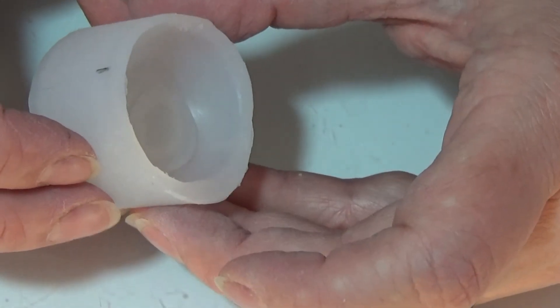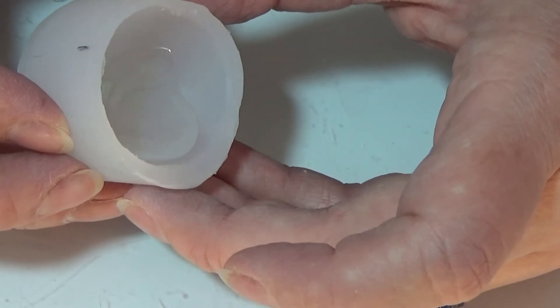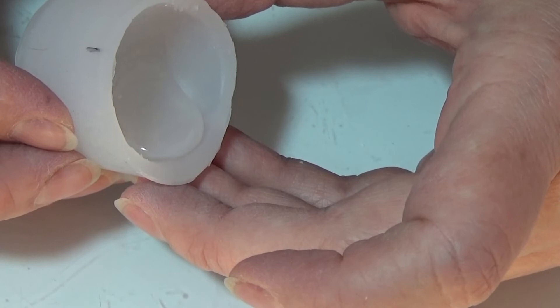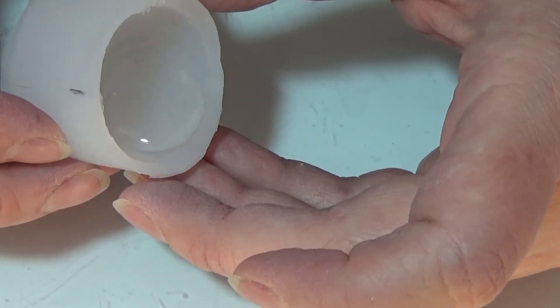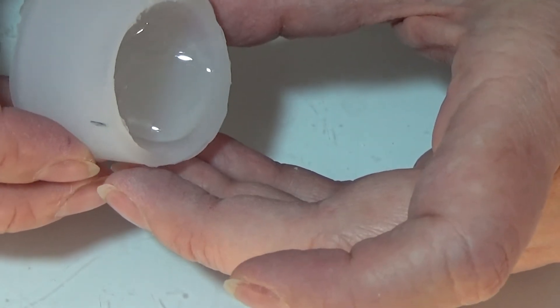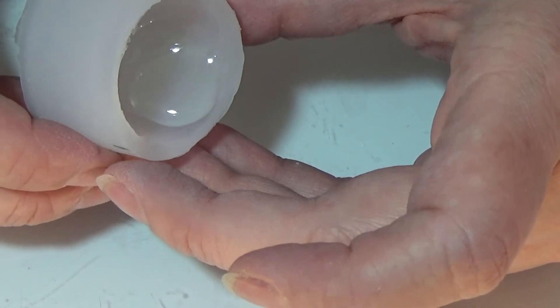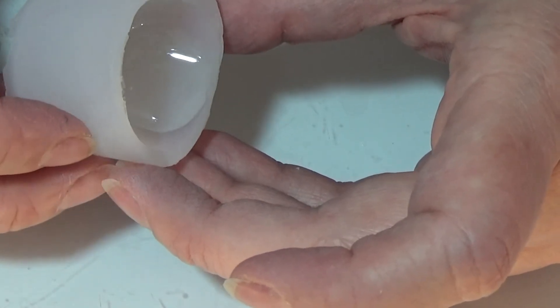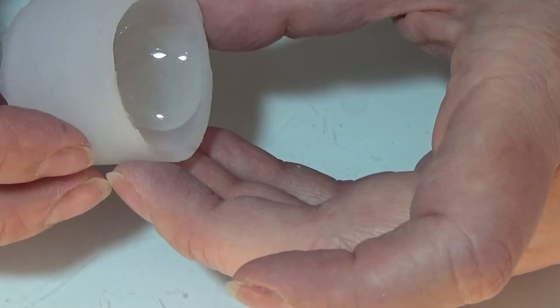Then I am carefully tilting my mold. As you can see, the resin is running out to the edge and I'm turning this mold around, making sure that I have resin all the way around in my mold.